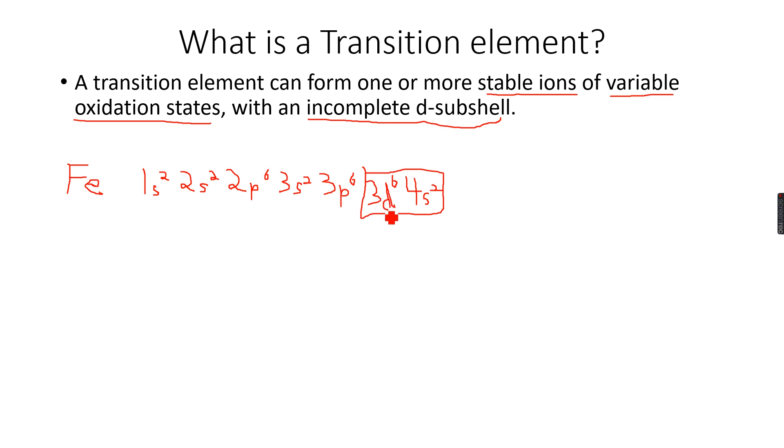But a D subshell can occupy 10, it has 6 here. I want to explain that you must have noticed I filled the 4S subshell first, and then the 3D subshell. If you remember from your AS levels, the 4S subshell is at a lower energy level than the 3D subshell, so because it is at a lower energy level, it fills first, followed by my 3D subshell.